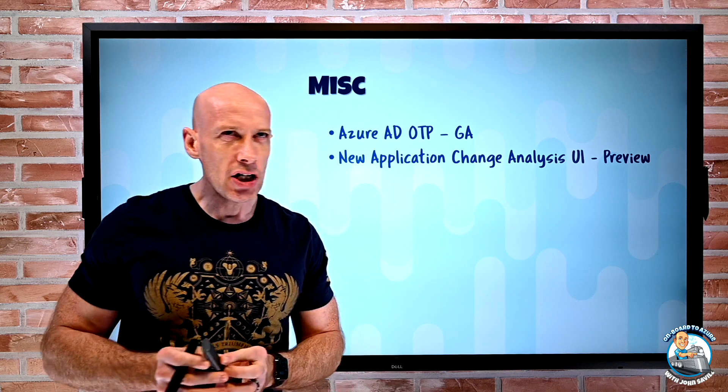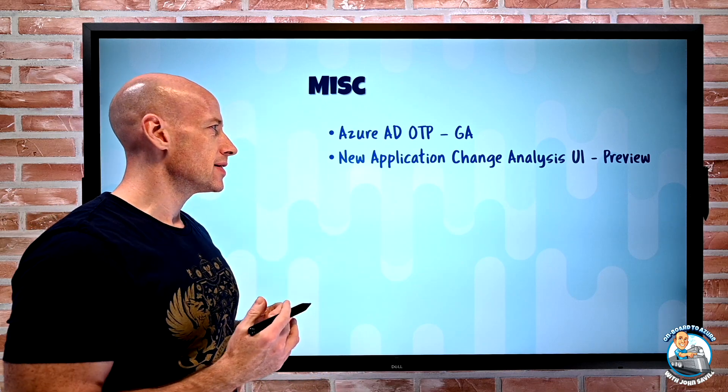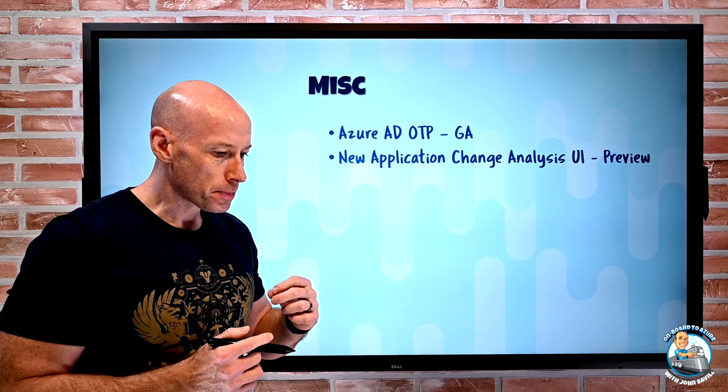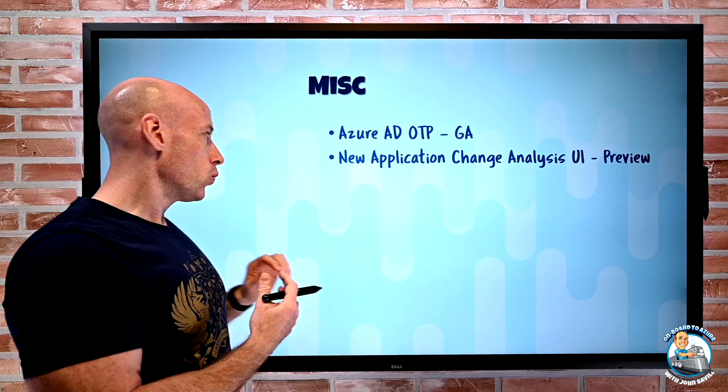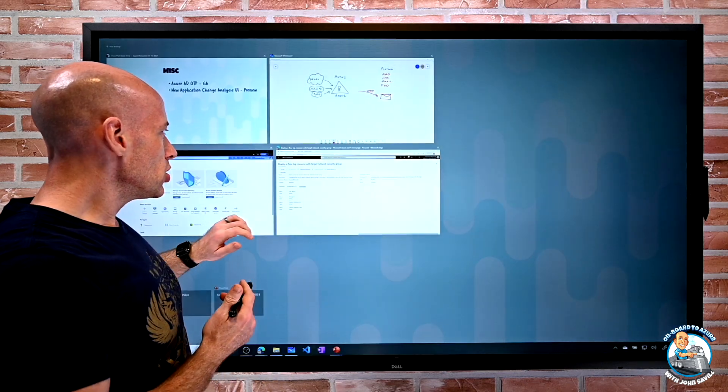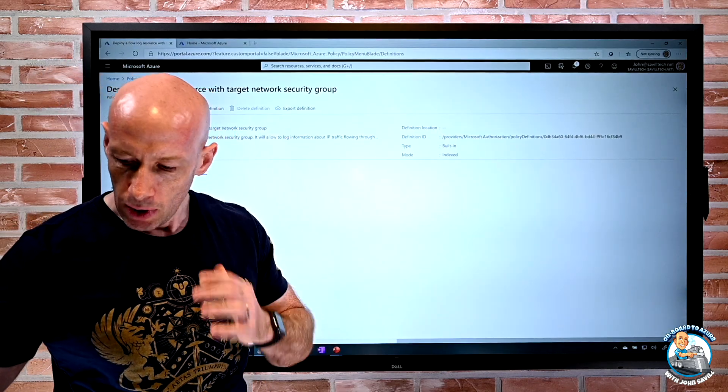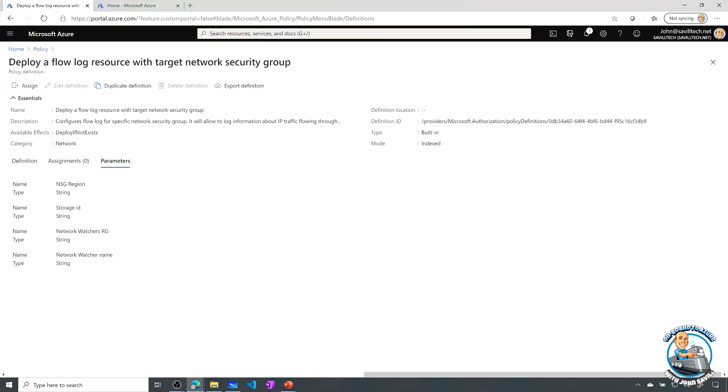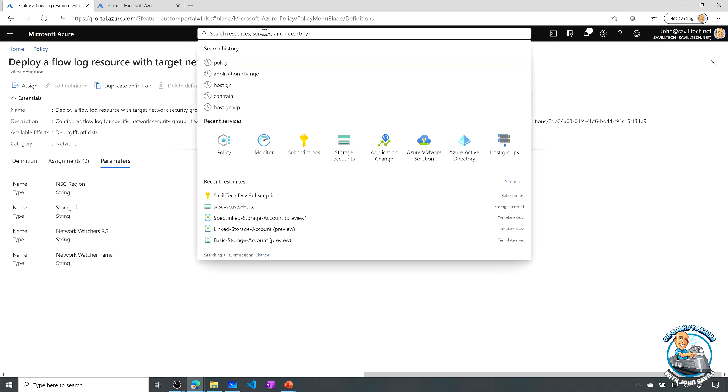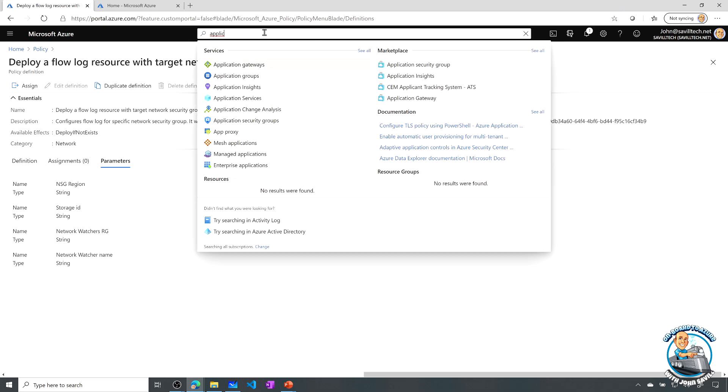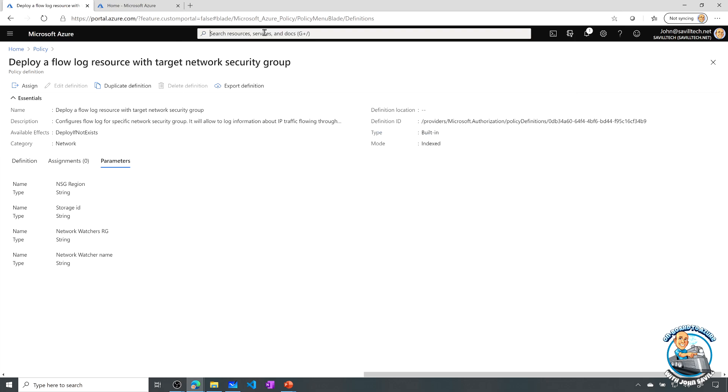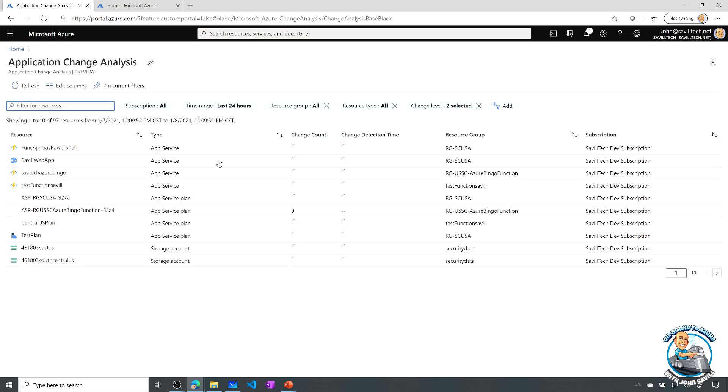There's a new application change analysis user interface in preview. So I talked about this actually a few weeks ago. So what the application change analysis is all about is I can think about, well, I'll show it to you. It's based on the Azure resource graph. And what we can actually now do is if I go to application change analysis, you can see here, it's basically tracking what changes that occur.